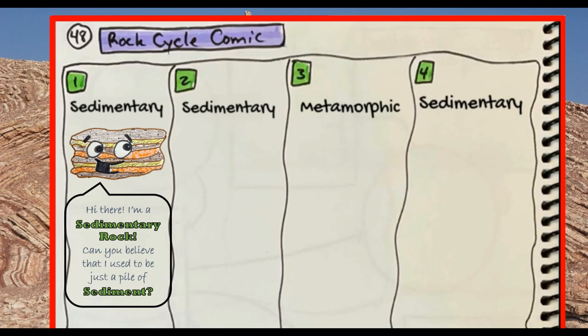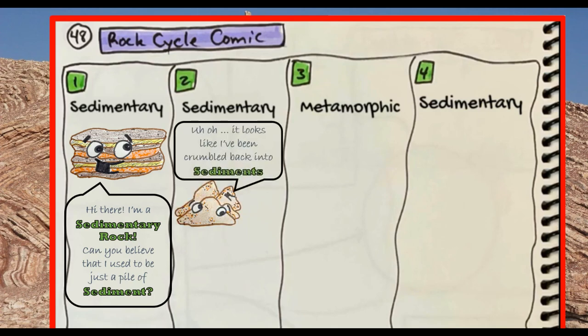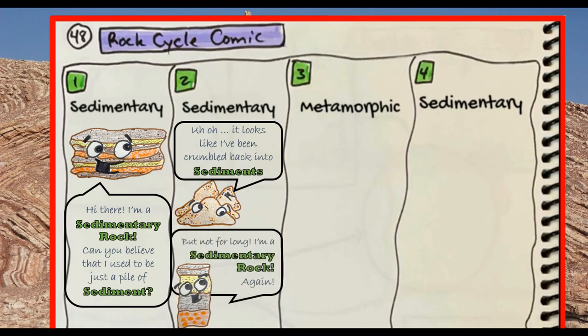Make sure that when you do this you are explaining how the rock type came to be as well. From there, my sedimentary rock is going to have to turn into another sedimentary rock, but before it does that it has to turn into a pile of sediment. Then it gets turned into a different kind of sedimentary rock.